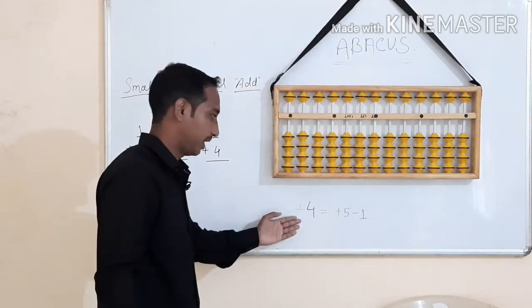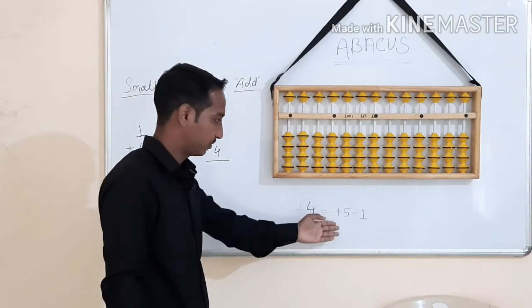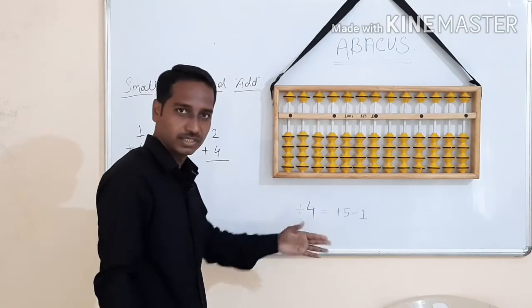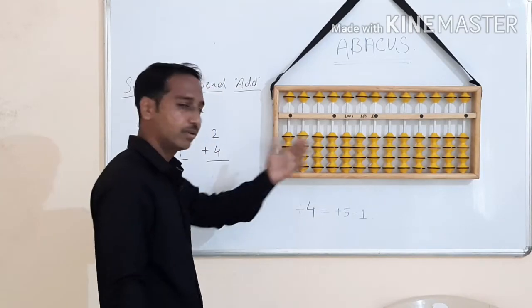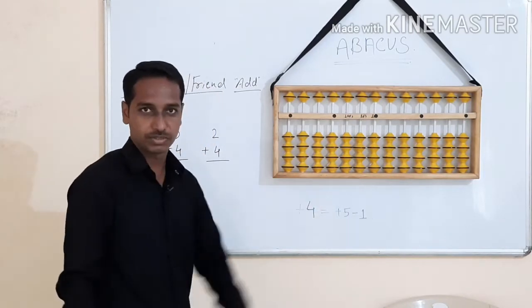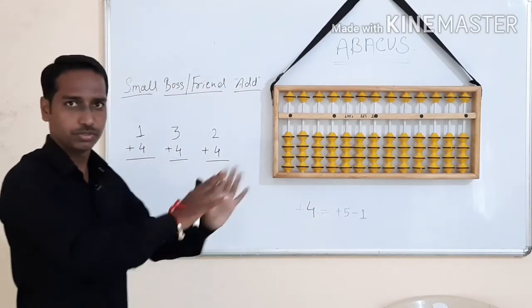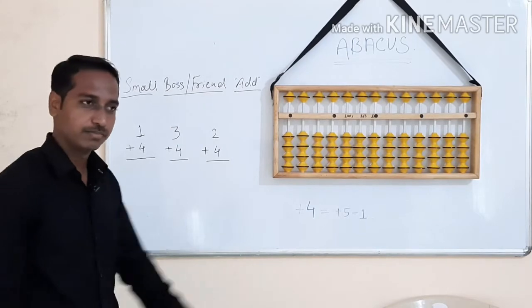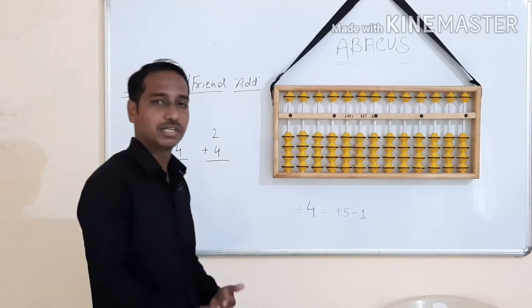This formula is Add 4, Add Boss 5, Less Friend 1. Let's use the formula for example. The formula is clear.